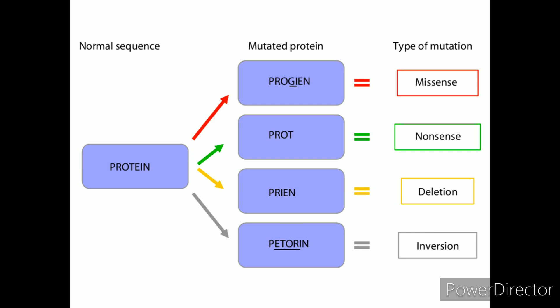Missense. When a base substitution results in the generation of a codon that specifies a different amino acid, it leads to a different polypeptide sequence. Depending on the type of amino acid substitution, the missense mutation is either conservative or non-conservative.